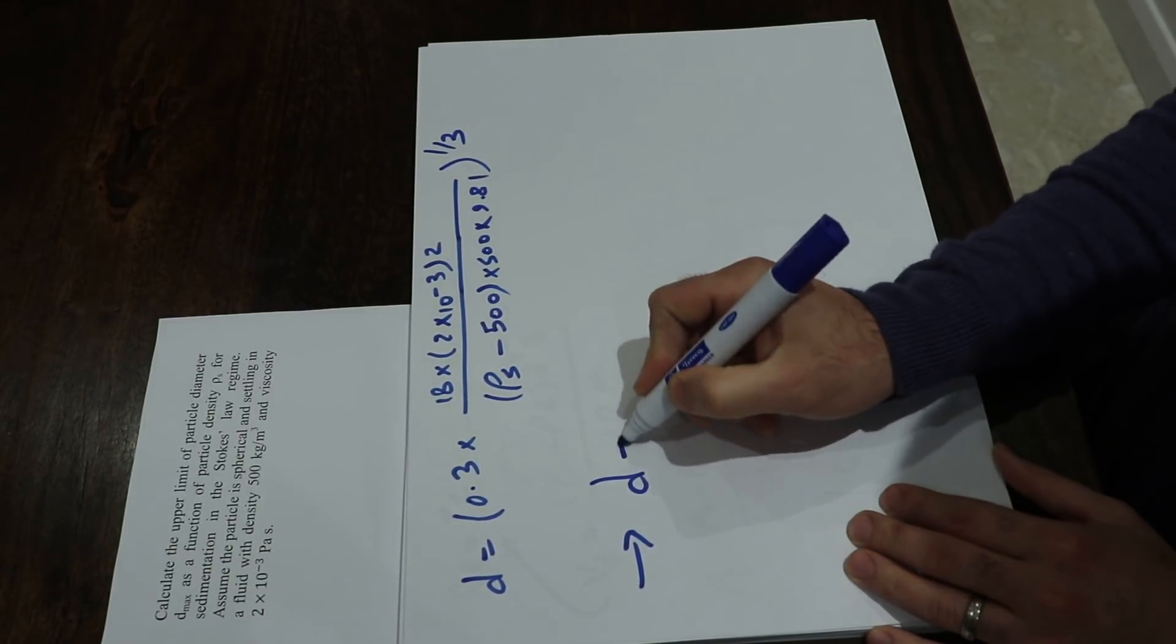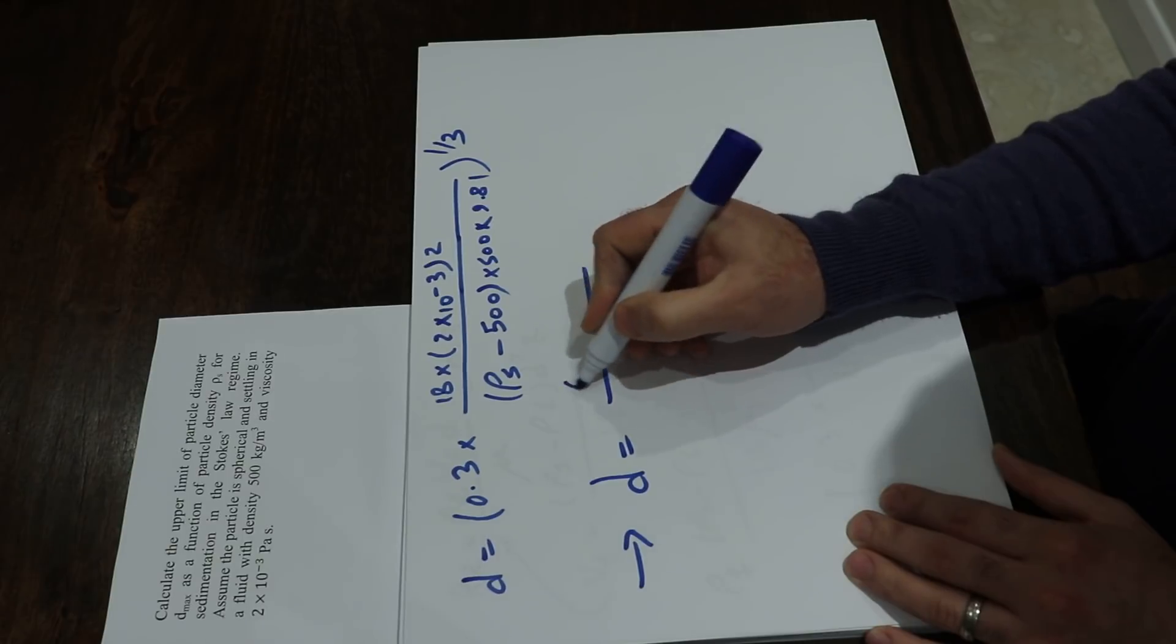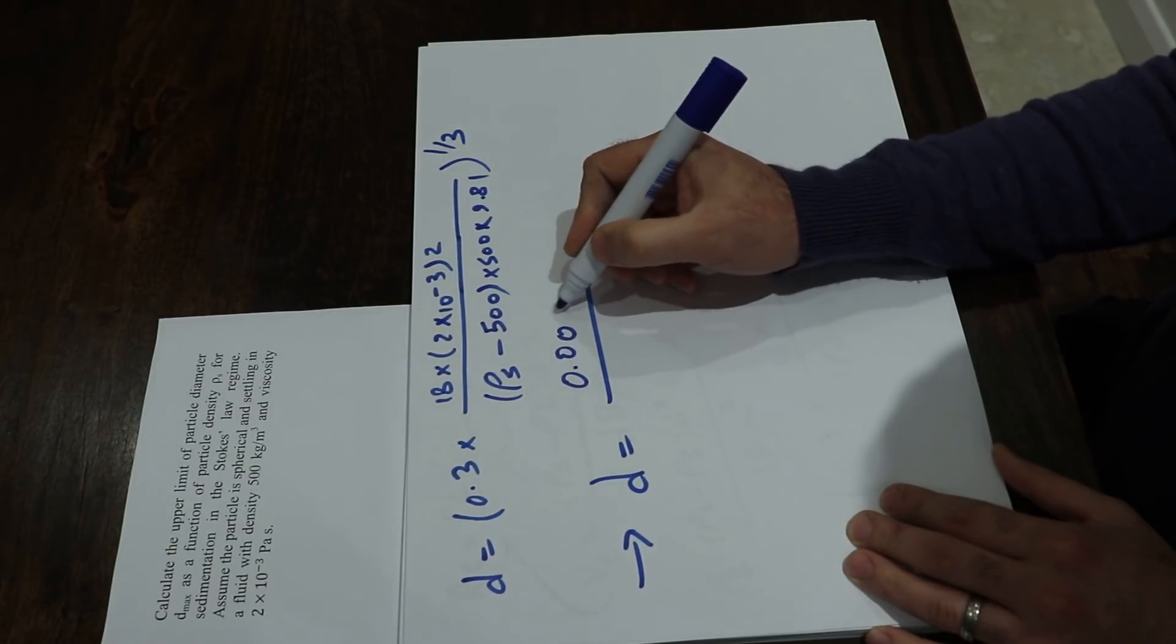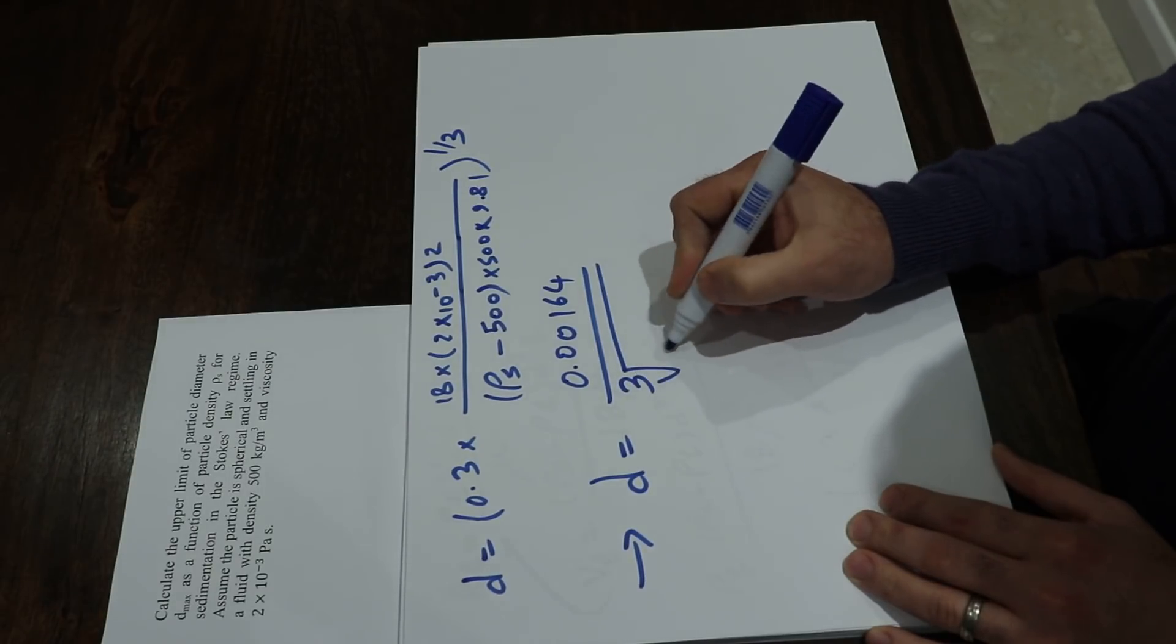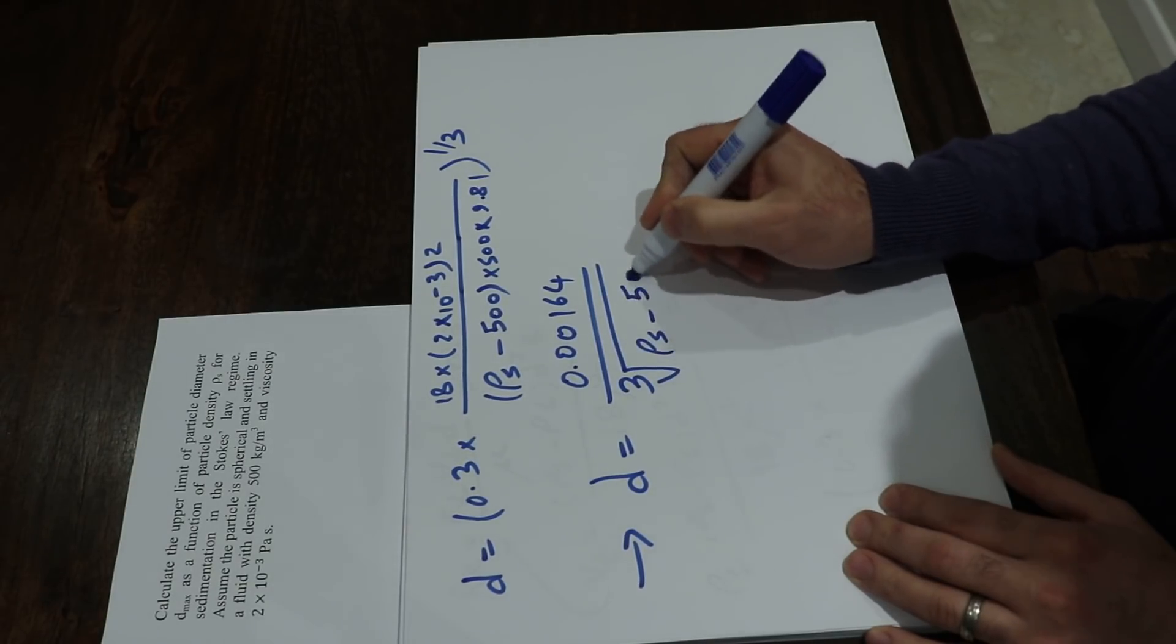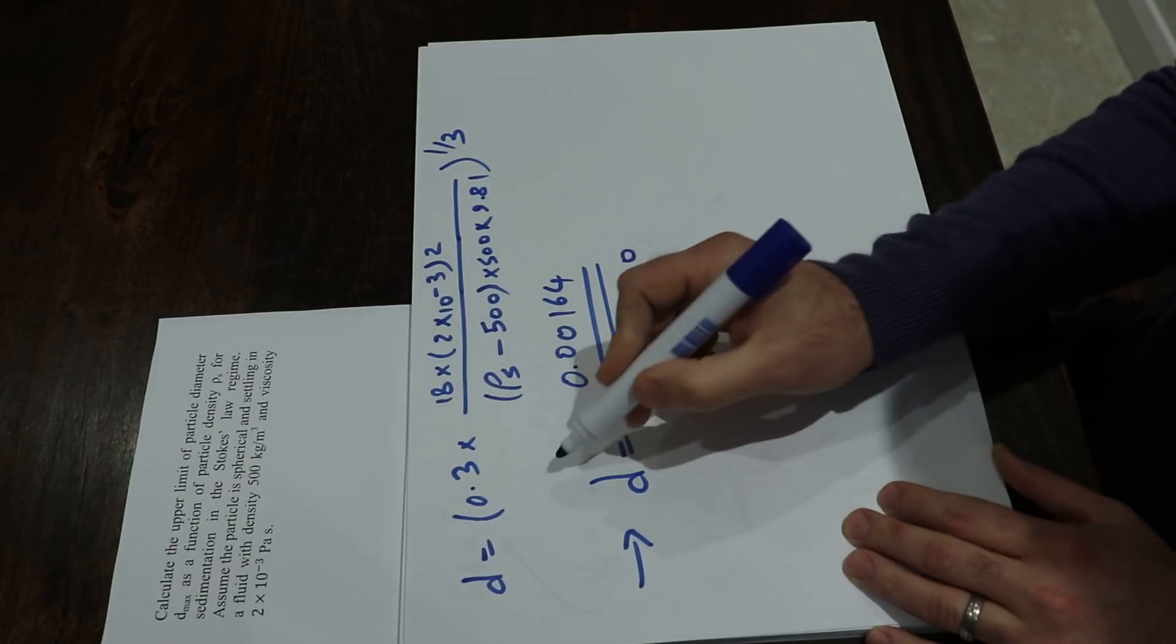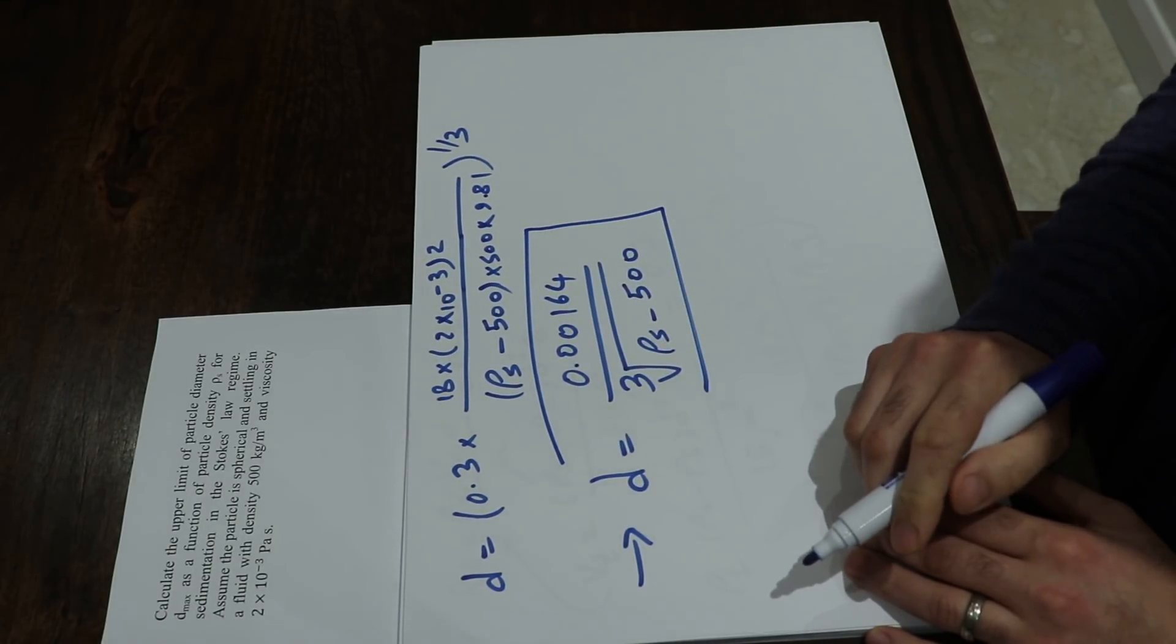We can make it simpler as d equals 0.0164 divided by the third root of (ρ_s minus 500), and that is basically the answer to the question.